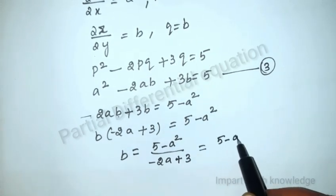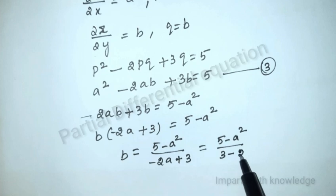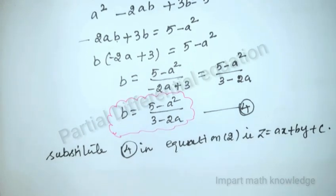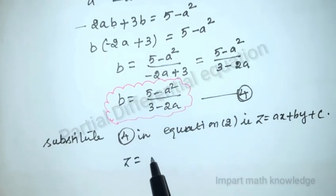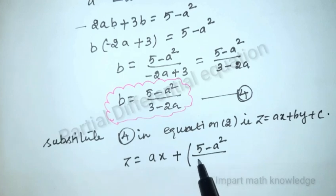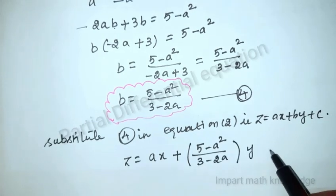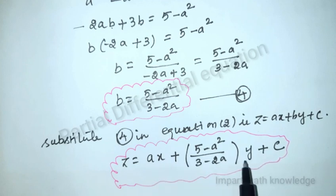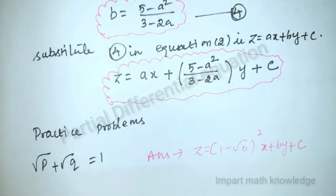Substitute b = (5 - a²) / (3 - 2a) into z = ax + by + c. We get z = ax + [(5 - a²) / (3 - 2a)]y + c. The constants here are a and c, and the variables are x and y, so this is the complete solution. Practice this problem for better understanding. If you have any doubt, please comment in the comment box. Thank you.